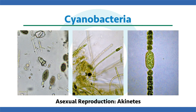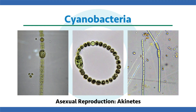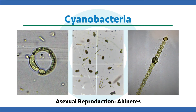Lastly, akinetes are quite common in cyanobacteria. Under stress conditions they form these protective reproductive cells that go dormant — very tough to control and very stable in environmental conditions. They pop up and start blooming and growing when conditions change and get right. Those are all the asexual types of reproduction for cyanobacteria and how they survive and multiply.